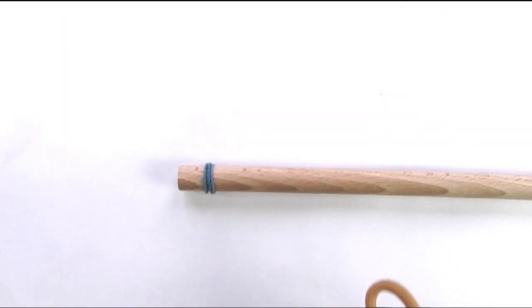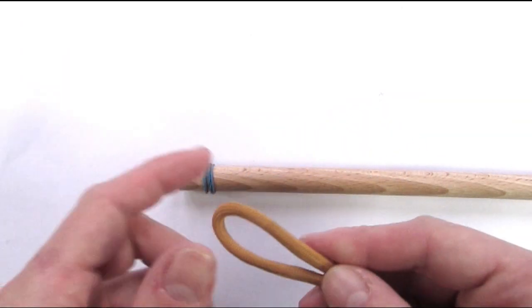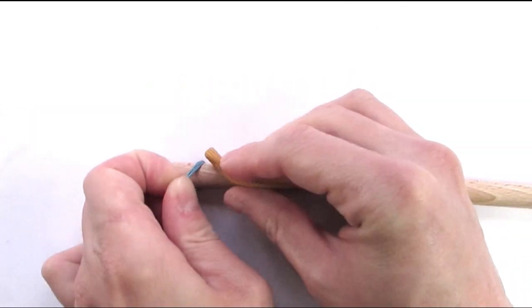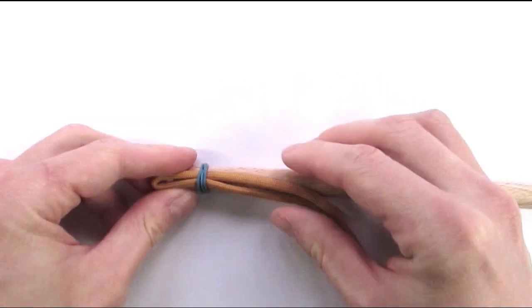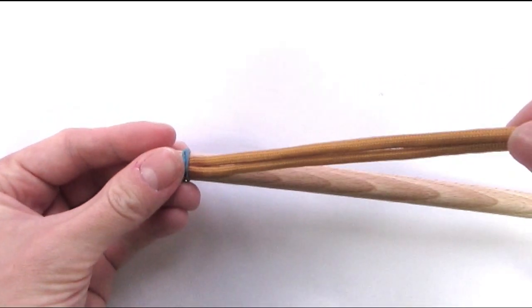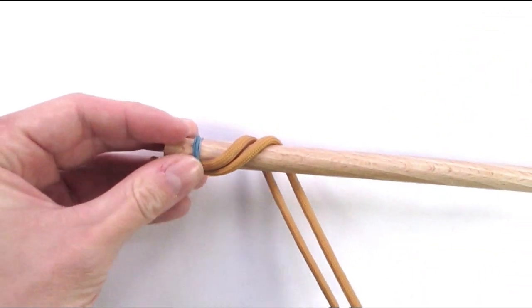I have my mandrel here and the first thing I'm going to do is fold my cord in half and attach it onto the mandrel. I'm then going to take both of the ends and do one wrap around the mandrel.